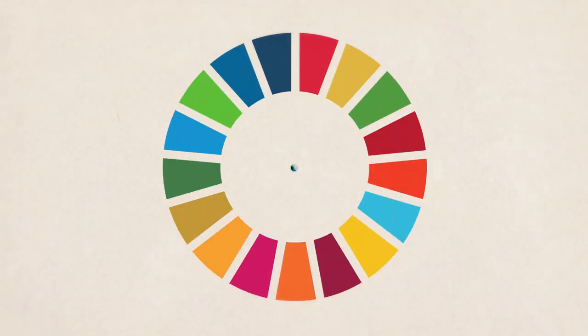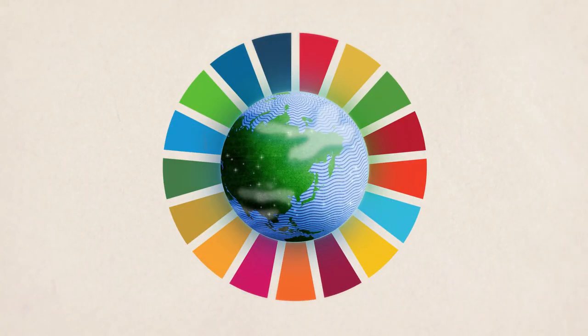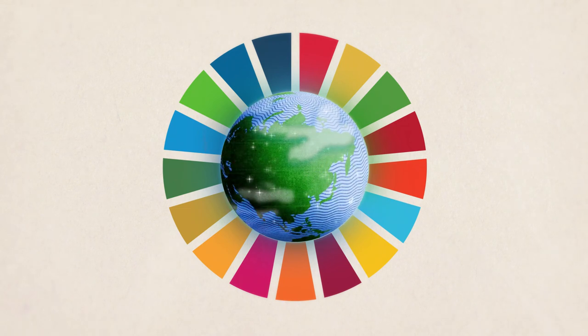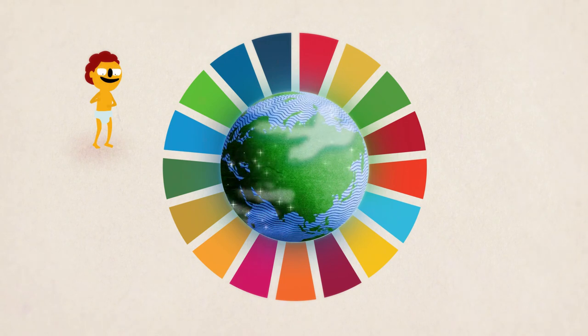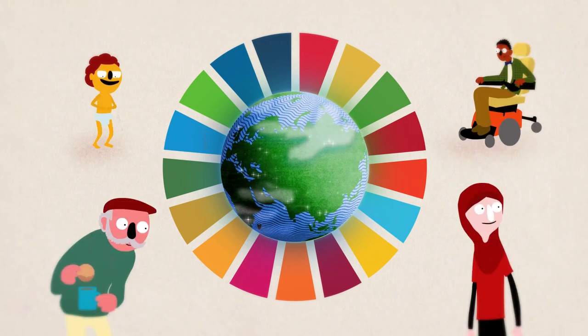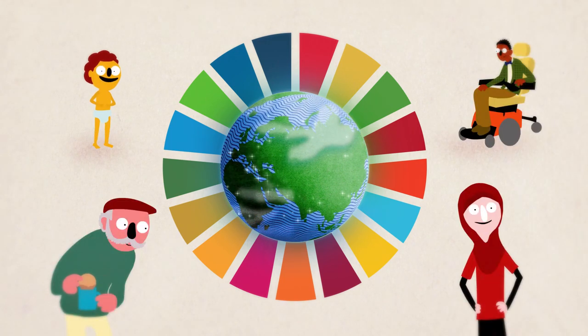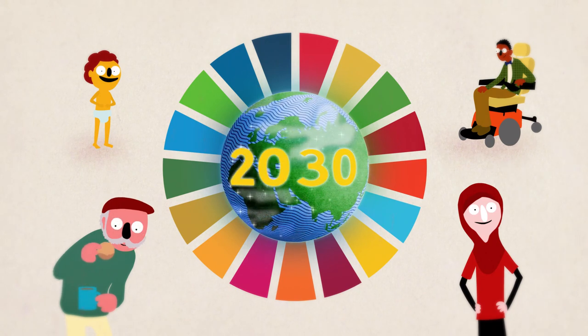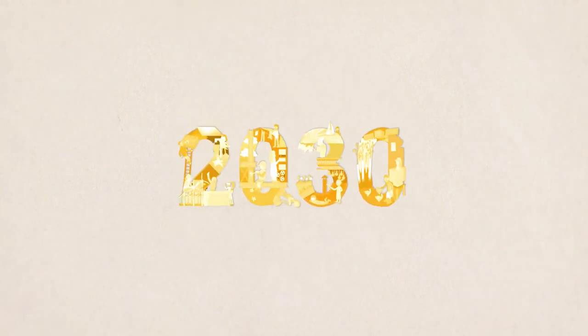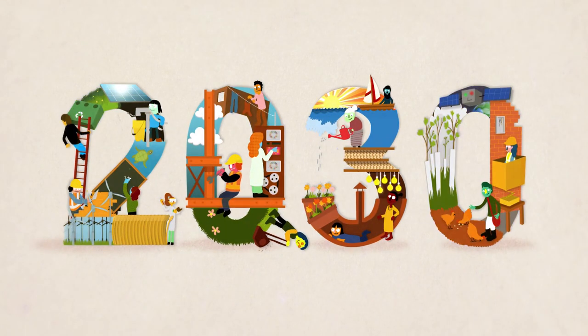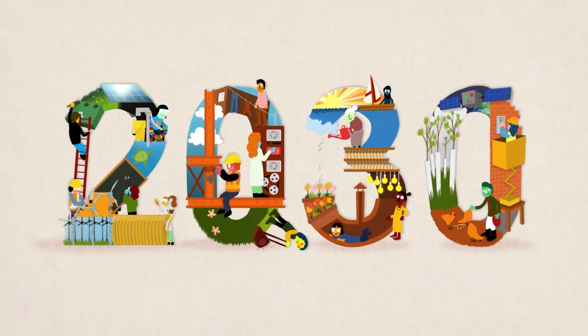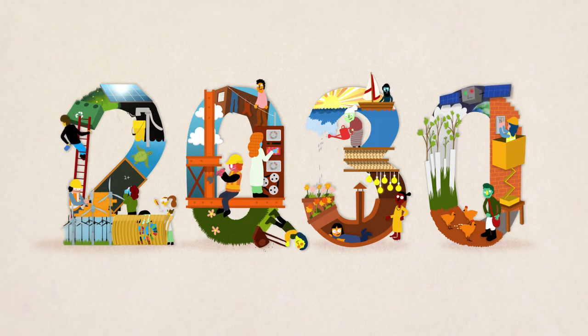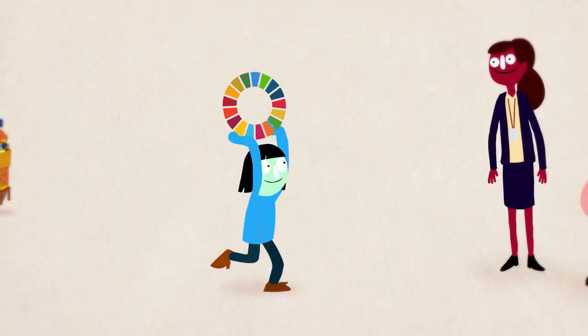They have just announced the Global Goals for Sustainable Development. These are 17 goals to protect the planet against climate change and make the world safer, fairer and more just for everyone. We have to achieve these goals by 2030. The great thing about a plan is that we can check how we're doing as we go along. Give ourselves a pat on the back if we do well and try harder if not. 2030 isn't so far away, so we need to start right now.